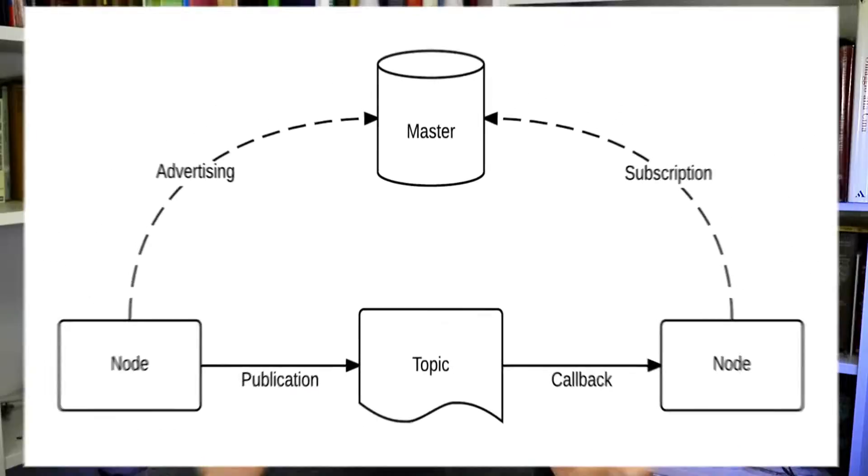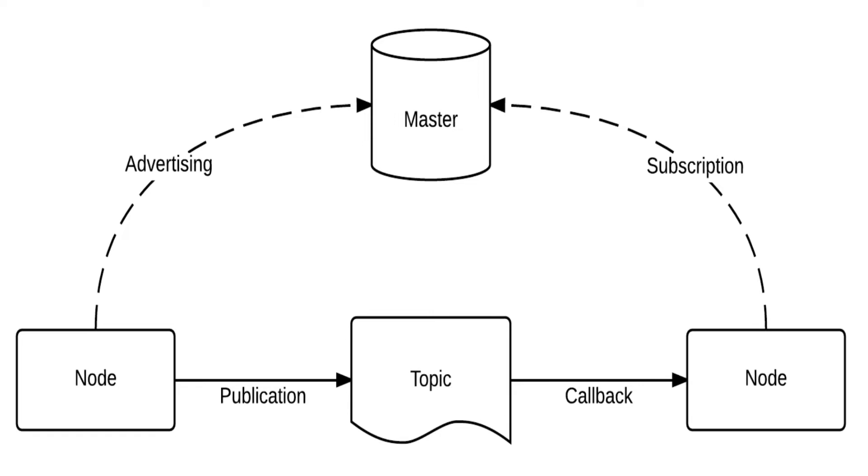Those nodes connect together thanks to a publish-subscribe protocol. What does it mean? It means that if a node has an information to share, it will share this information using a topic, and if another node is interested in that information, it subscribes to that topic and reads the information.